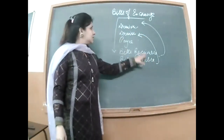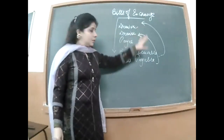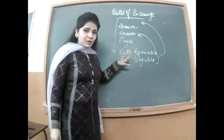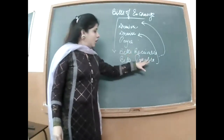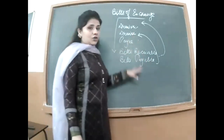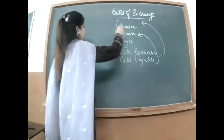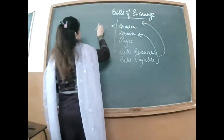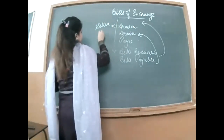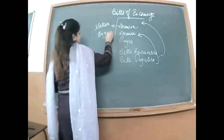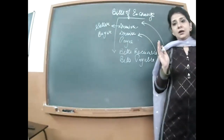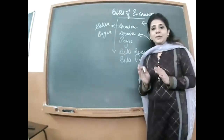Let me repeat: drawer always writes the bills receivable, sign karvaake apne paas proof rakhta hai, aur payment drawee ne karni hoti hai. To simplify: drawer is always the seller and drawee is always the buyer. Yeh jo transactions honi hain, this will be in sale and purchase transactions.